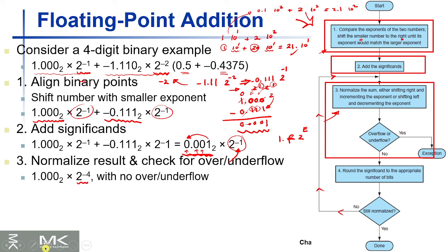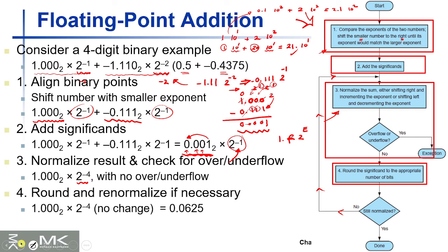The fourth step is to round the significand to the appropriate number of bits. For example, if you only have two bits for the fraction, you would need to remove extra bits or perform rounding. In our case, since it's a four-digit binary example, we have enough bits and no rounding is needed — the round leads to no change.